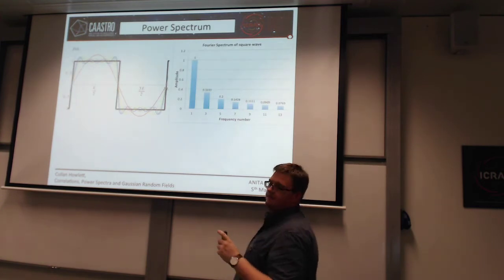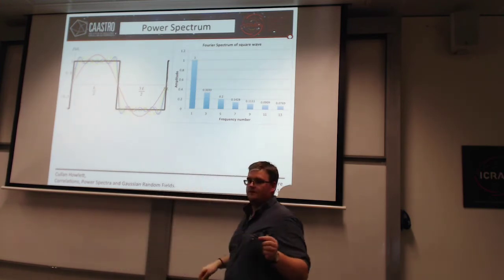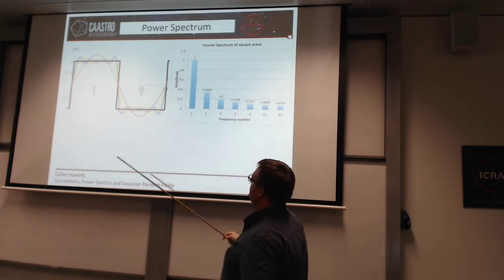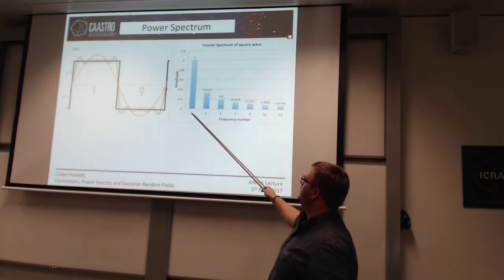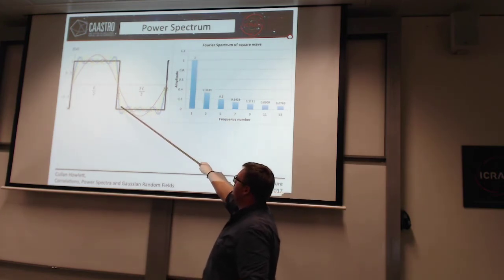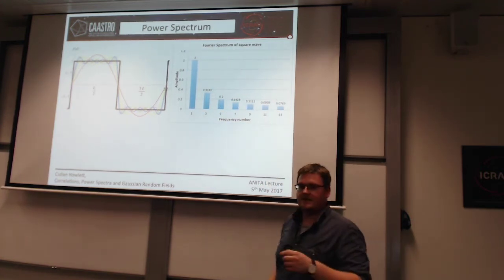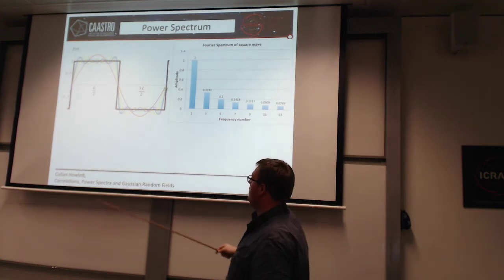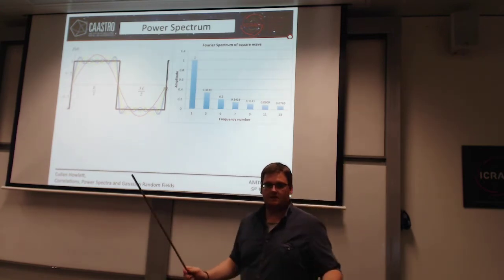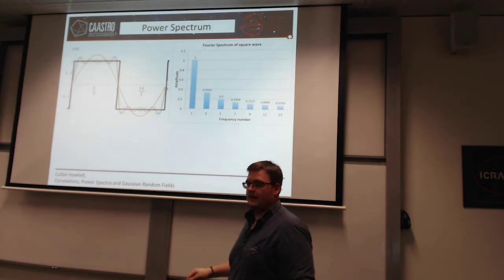What happens if we take a square wave? Remember from the previous lecture that a square wave can be written as a sum of different Fourier modes. If you take the power spectrum, you'll see the fundamental frequency has a lot of power, then a second harmonic with another amount of power, and so on. These constants are nothing more than the normalizations you give to those Fourier modes when computing the Fourier transform of a square wave. In the same way, you can decompose any field into different Fourier modes at different frequencies, and for each frequency calculate the power.